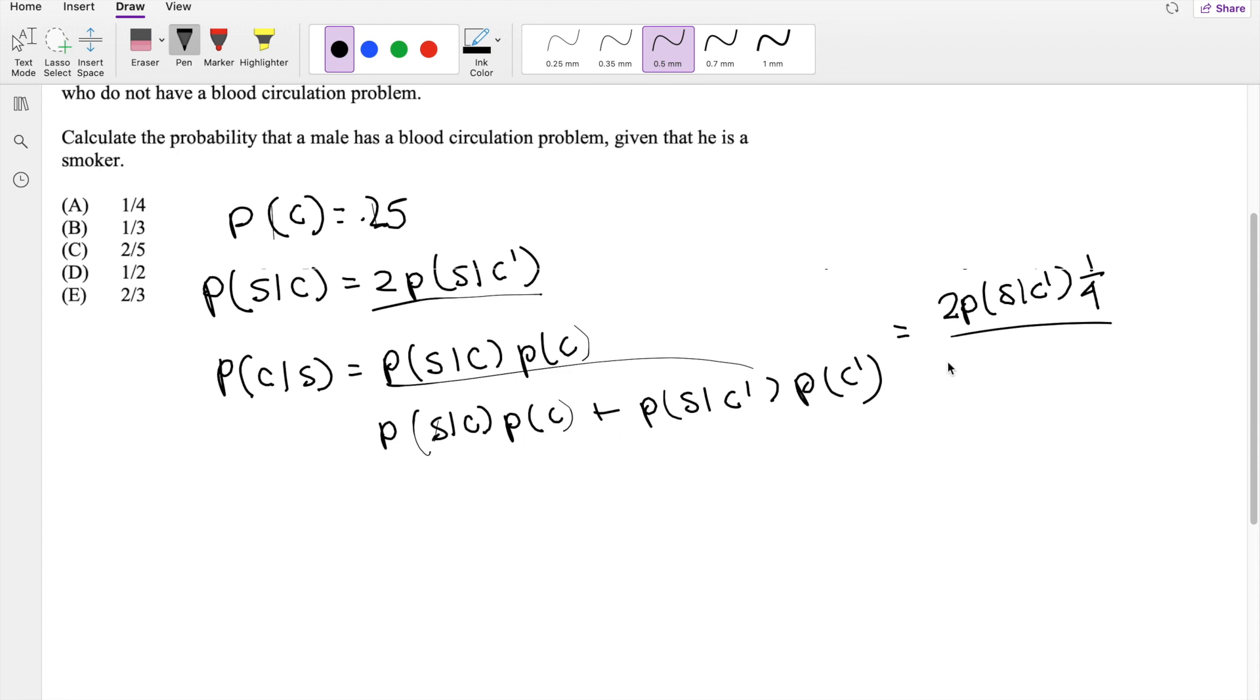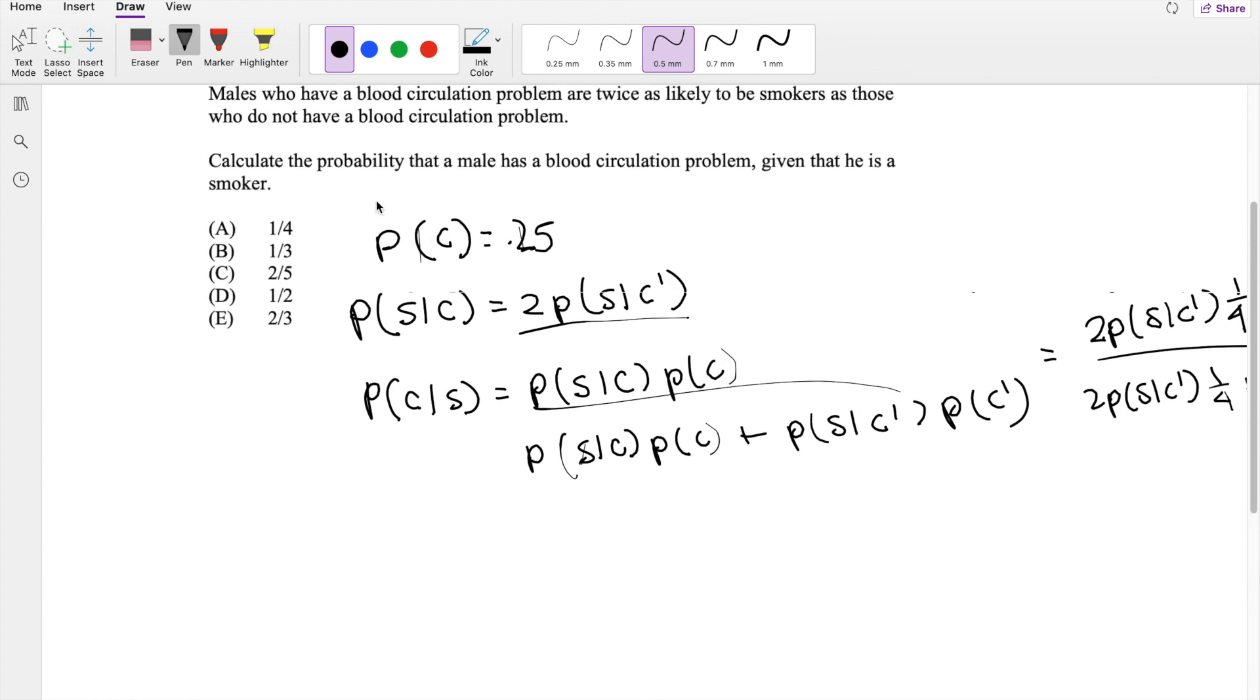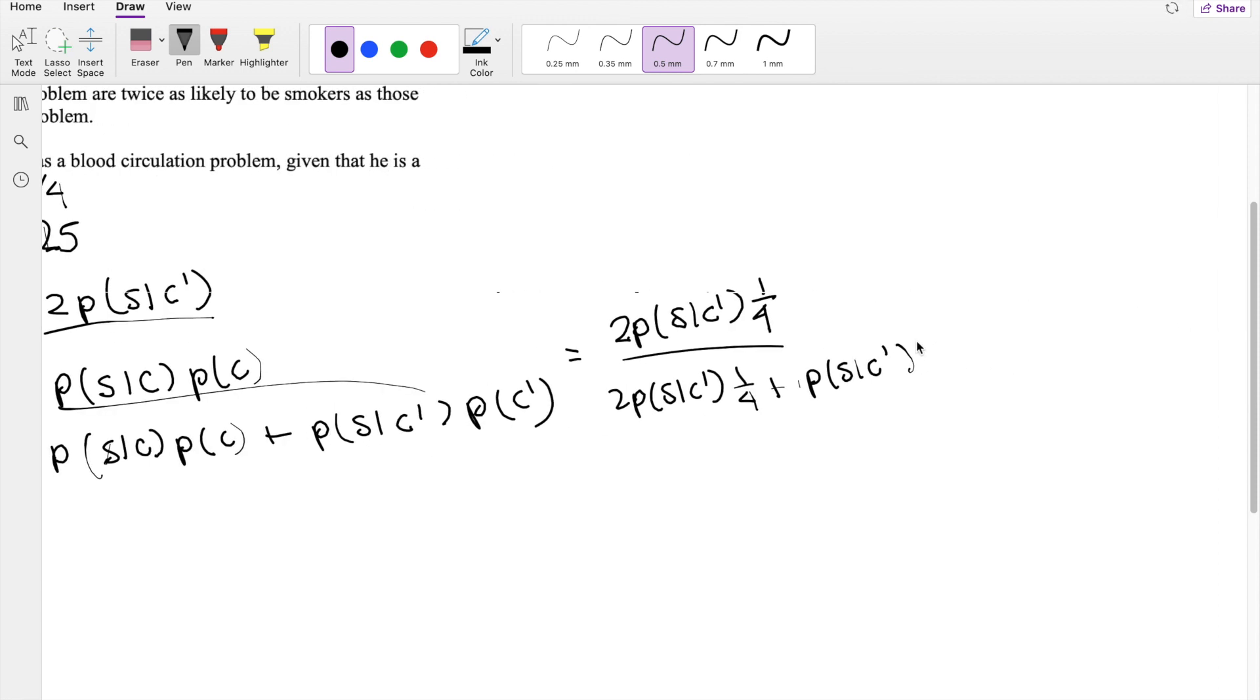Denominator is the same thing, 2 times the probability of S given not C, times 1 fourth, plus the probability of S given not C, times the probability of not C. If the probability of C is 1 fourth, then the probability of not C must be 3 fourth.